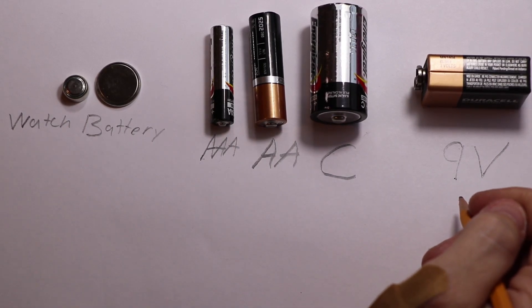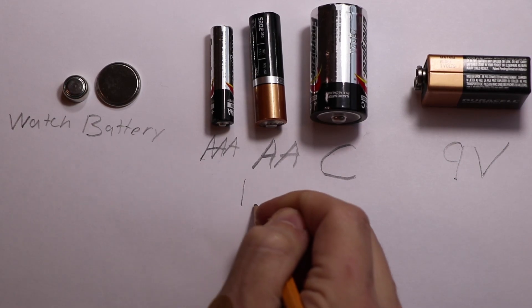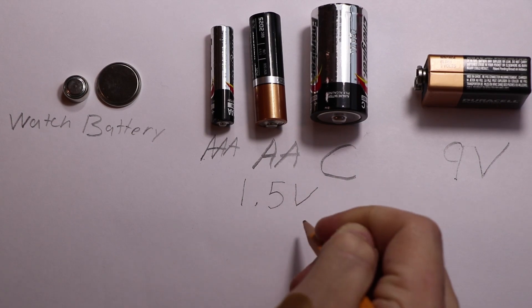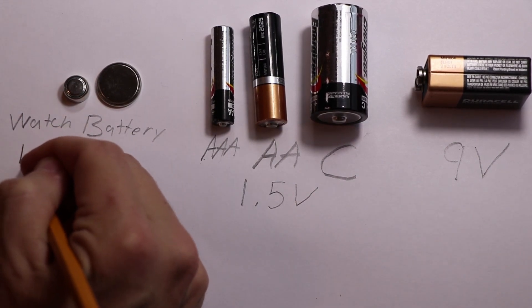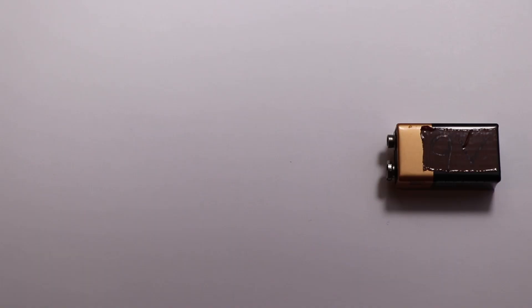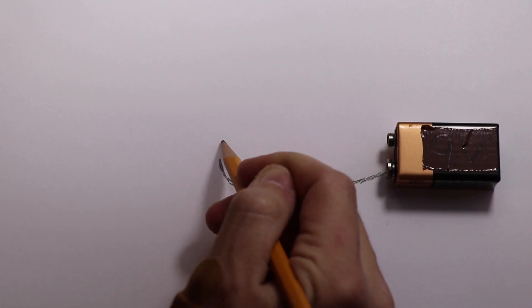From right to left we have the 9-volt battery, in the middle the C, double A, triple A which are all 1.5 volts, and watch and button batteries that can vary. This one is 1.5 and the other is 3 volts. To draw power out of the battery we need to connect one side to the other, positive to negative, and this power loop is called a circuit.